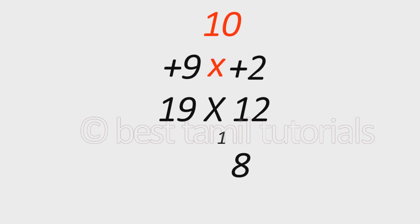The next step is cross multiplication. If you do cross multiplication, 19 plus 2 equals 21, or 12 plus 9 equals 21.